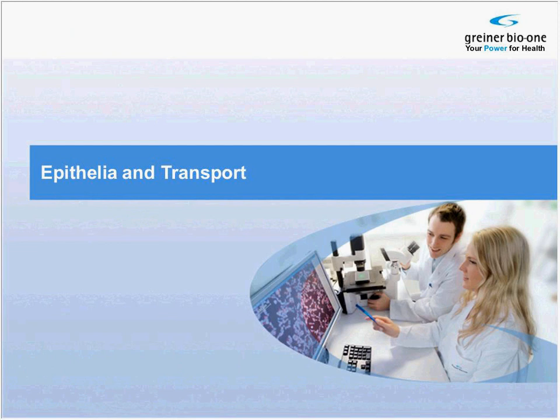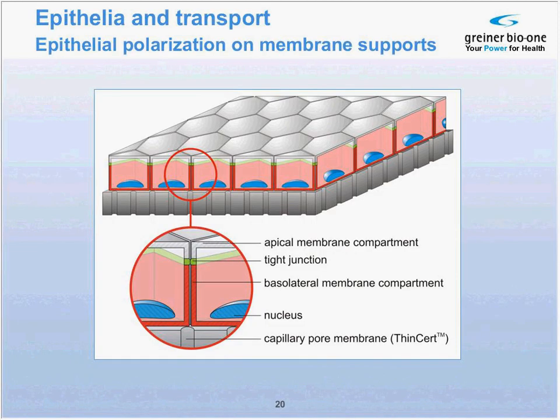Looking at epithelia and transport studies, we use a pretty similar device — an insert — but now pores are smaller: 0.4 or 1 micrometer. We are addressing completely different cellular phenomena. Transport is always seen in the context of epithelia, which develop very specific characteristics in vivo that we want them to develop also in vitro. It has been proven that features of epithelia are only developed in cell culture inserts, but never if you cultivate epithelial cells in a petri dish or well plate.